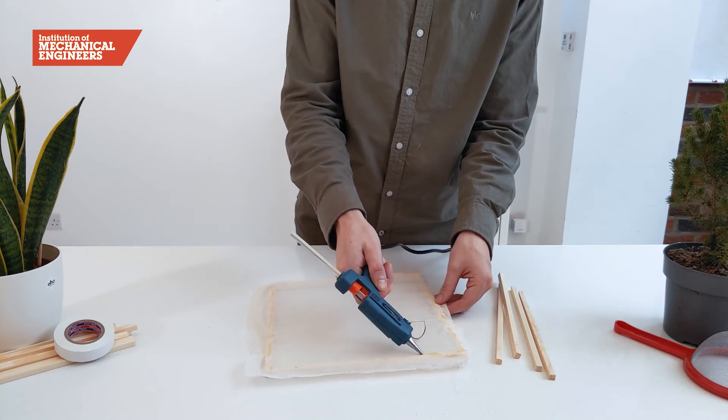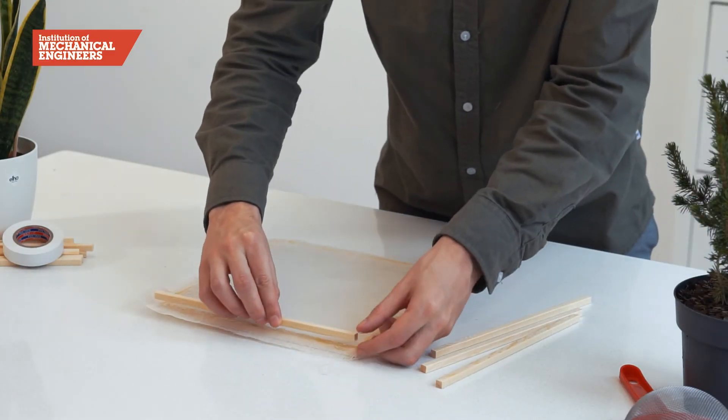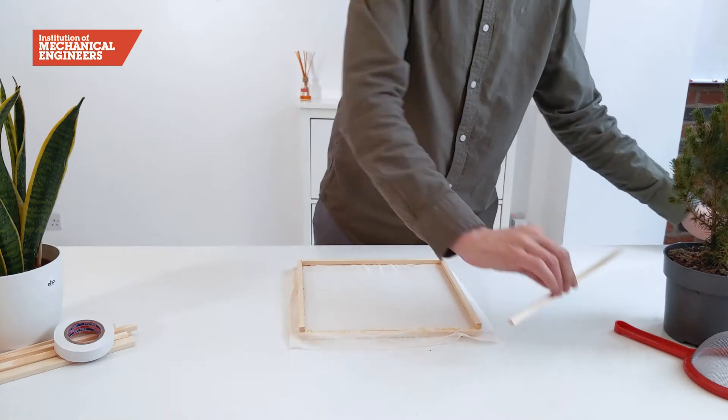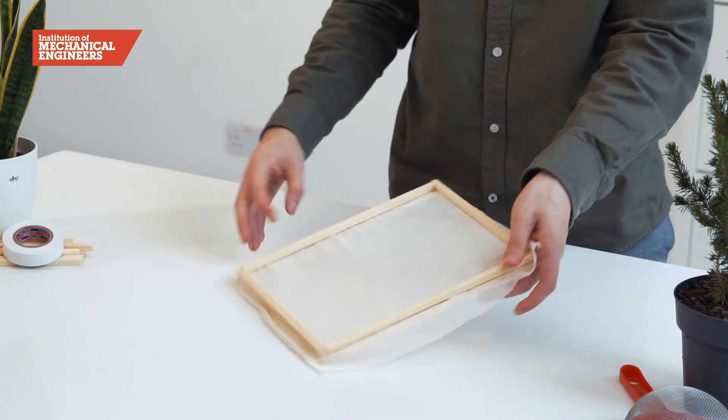Finally glue another four pieces of balsa wood to the other side of the frame. This will give you a straight edge to push the pulp up to so that you have a neat finished product.